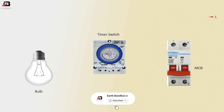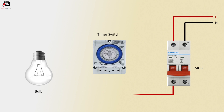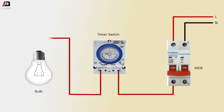Phase connection input to double pole MCB circuit breaker. Neutral connection input to double pole MCB circuit breaker. Phase connection outgoing from MCB circuit breaker to connect timer switch. Phase connection outgoing from timer switch to connect bulb phase point.